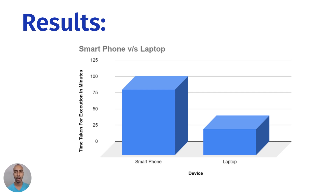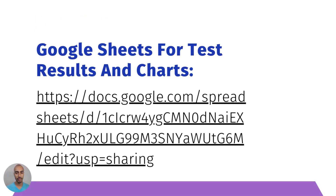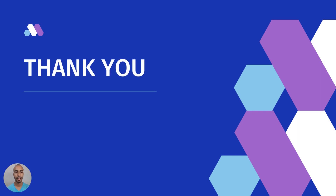System on chip consumes less power compared to the laptop's processor because it is more lightweight and built to conserve battery energy so a mobile phone can be used for longer durations. A laptop's processor is built for performance rather than power saving. We would like to end our presentation here and hope that you have learned something from our experiments. The Google Sheets for the test results and charts can be accessed through the provided link. Thank you.